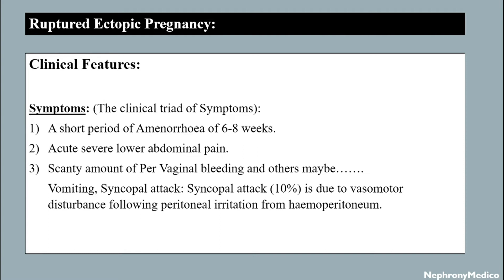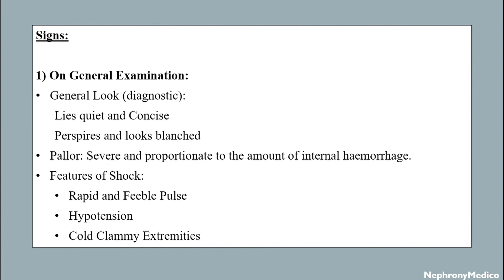Clinical features — symptoms: the clinical triad includes a short period of amenorrhea of six to eight weeks, acute severe lower abdominal pain, scanty amount of per vaginal bleeding, and others such as vomiting and syncopal attacks.